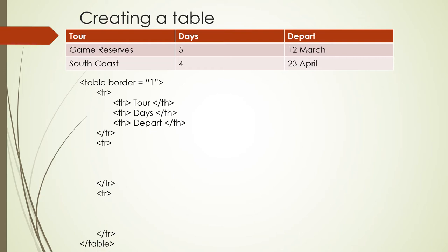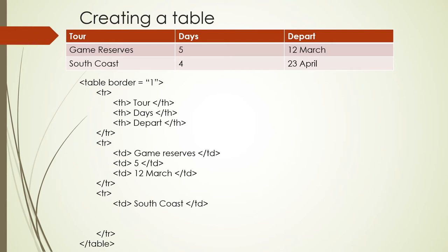In the second row of the table, this is table data: Game Reserves, 5, and 12 March. So in the second row's tags, we will have table data for Game Reserves, 5, and 12 March. For the third row, it will look similar — South Coast, 4, and the 23rd of April.